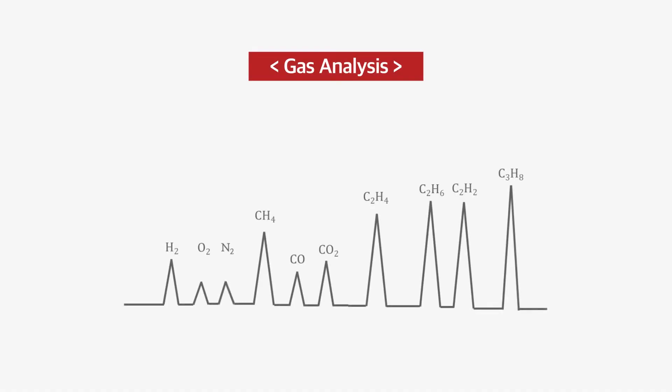Hydrogen to carbon monoxide are separated in molecular sieve column, and carbon dioxide to hydrocarbons over C2 are separated in Porapak N column. Hydrogen and oxygen are detected by TCD. Carbon monoxide and carbon dioxide are transferred to the methanizer to be converted to methane and detected by FID. And the other light hydrocarbons like methane, ethane, ethylene, acetylene, and propane are detected by FID.